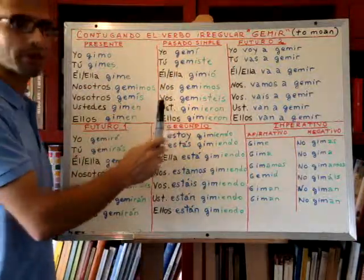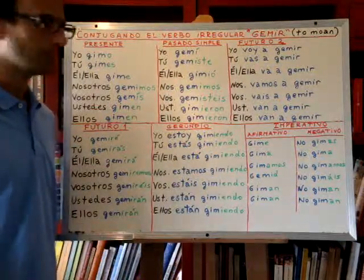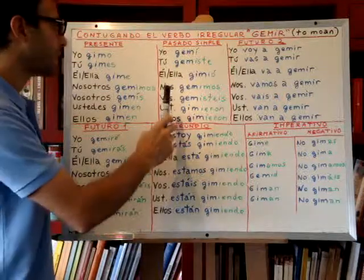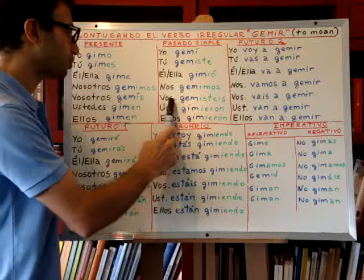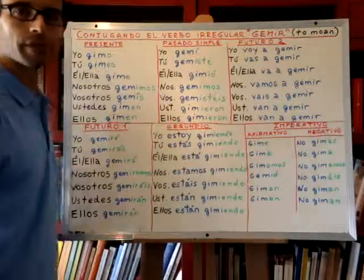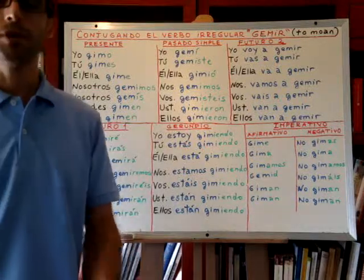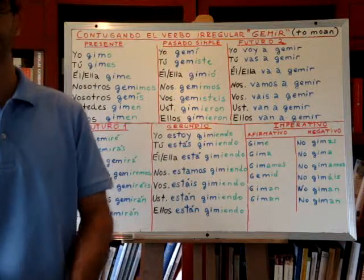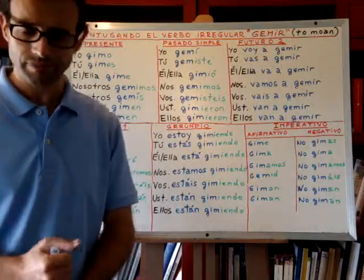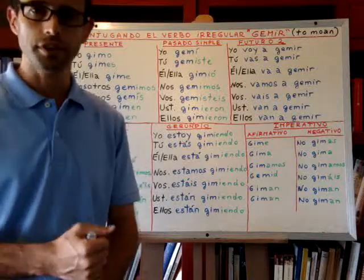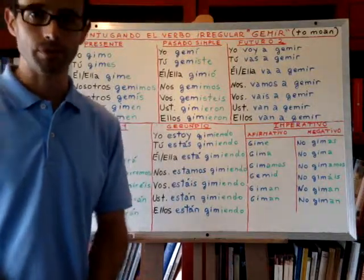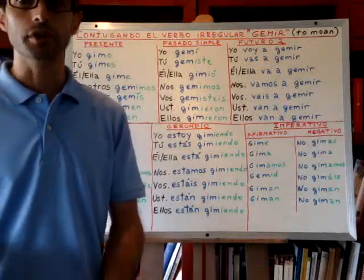Let's see the past — simple past. Yo gemí — I moaned. Tú gemiste. Él or ella gimió. Nosotros gemimos. Vosotros gemisteis. Ustedes gemieron. And ellos gemieron. For example: you moan in pain because you hurt your hand — tú gemiste de dolor porque te lastimaste la mano. Te lastimaste la mano means you hurt your hand.